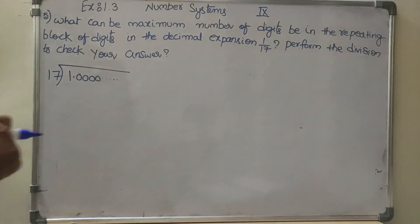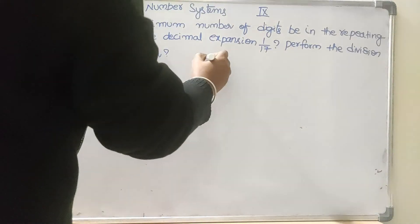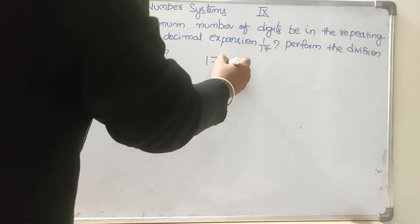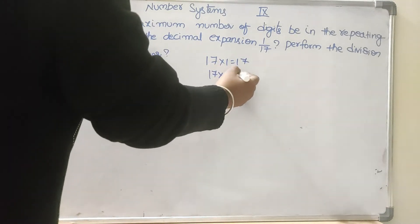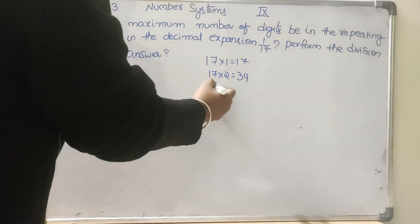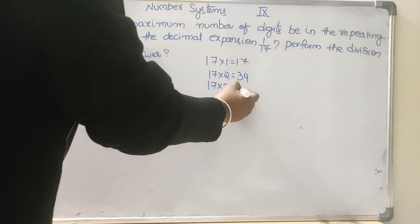Now we will write the 17 table here. 17 ones are 17, 17 twos are 34, 17 threes are 51.